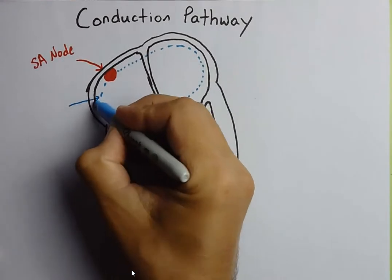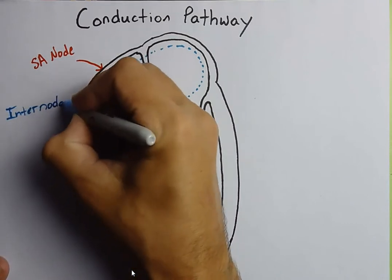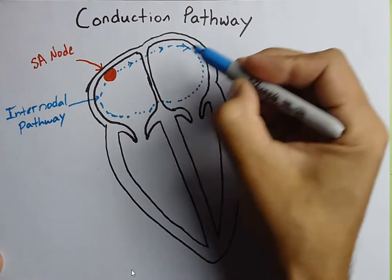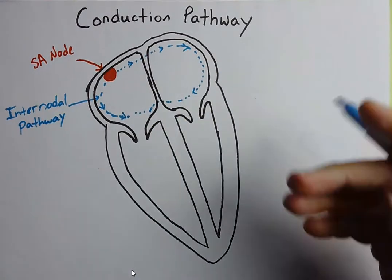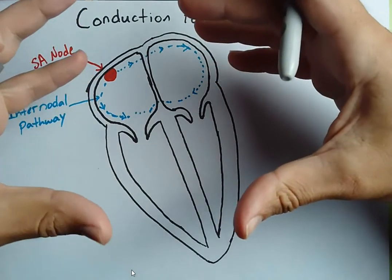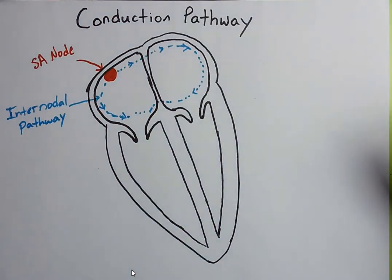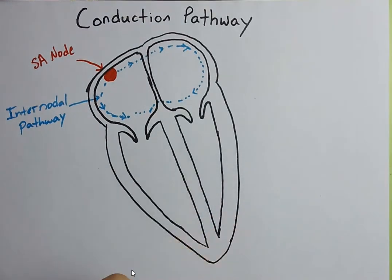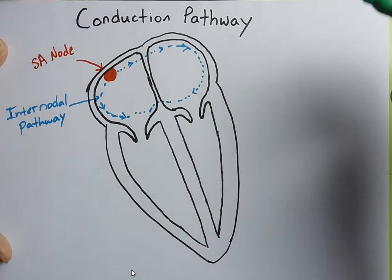This pathway of specialized conducting fibers are called internodal pathways. The internodal pathways are going to be taking current and moving them through both the right and the left atria. As that electrical current hits the cardiomyocytes, it's going to cause those cardiomyocyte cells to contract. If the electrical current hits the atria first, what's the first part of the heart that's going to start to contract? The answer is the atria. Both the right and the left atria are going to contract first.